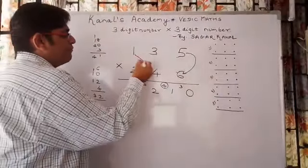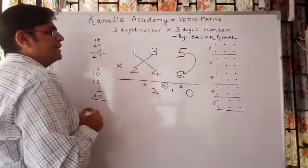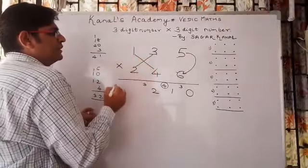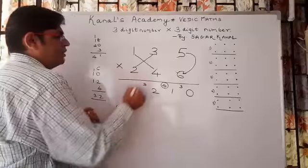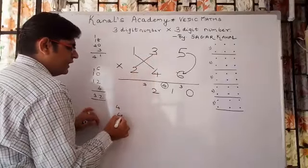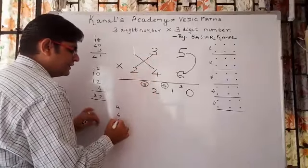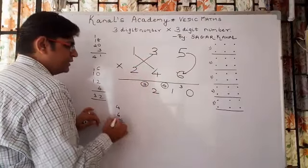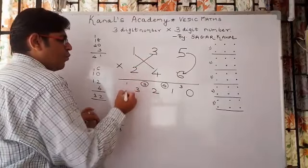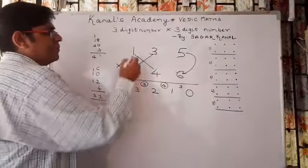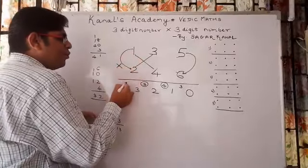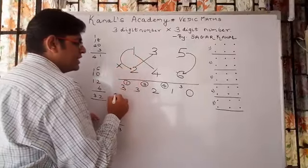Step number four: you cross multiply these numbers. 4 times 1 is 4, 3 times 2 is 6, and you add this 3. Total is 13 - write 3, carry 1.